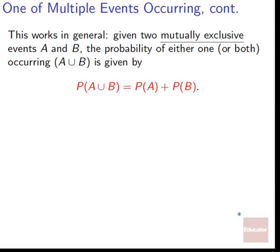This idea works in general: given two mutually exclusive events A and B, the probability of either one or both occurring is P(A ∪ B) = P(A) + P(B). Since the two events can't both happen simultaneously, we just add the two probabilities together. This is another basic one that comes up on tests and homework.